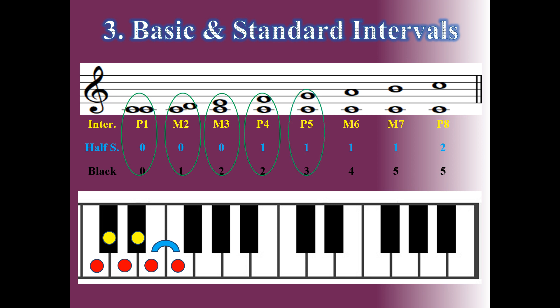DO to SOL: DO, RE, MI, FA, and SOL — five white keys and three black keys. The perfect fifth interval has five white keys, three black keys, and one half step.